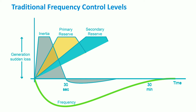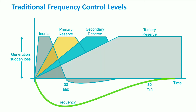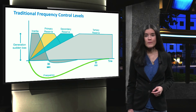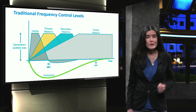Secondary control is responsible for restoring the frequency to its nominal value following contingency events. Secondary control is also known as load frequency control. Tertiary control is activated to replace the secondary control reserves over periods ranging from minutes to hours. Later this week, we will look at these control mechanisms in more detail.